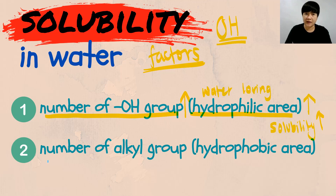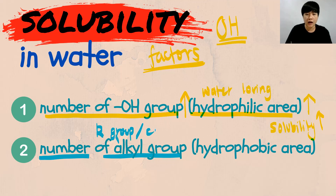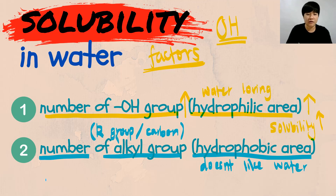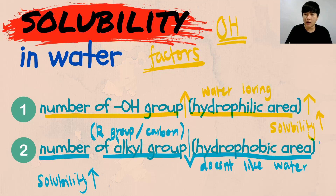The second factor affecting solubility is the size of the alkyl group — your R group or carbon-carbon group — which is your hydrophobic area that does not like water. If I want my solubility to be higher, your alkyl group must be smaller and your hydrophobic area must be smaller. When the alkyl group is smaller and the hydrophobic area is smaller, only then will the solubility increase.